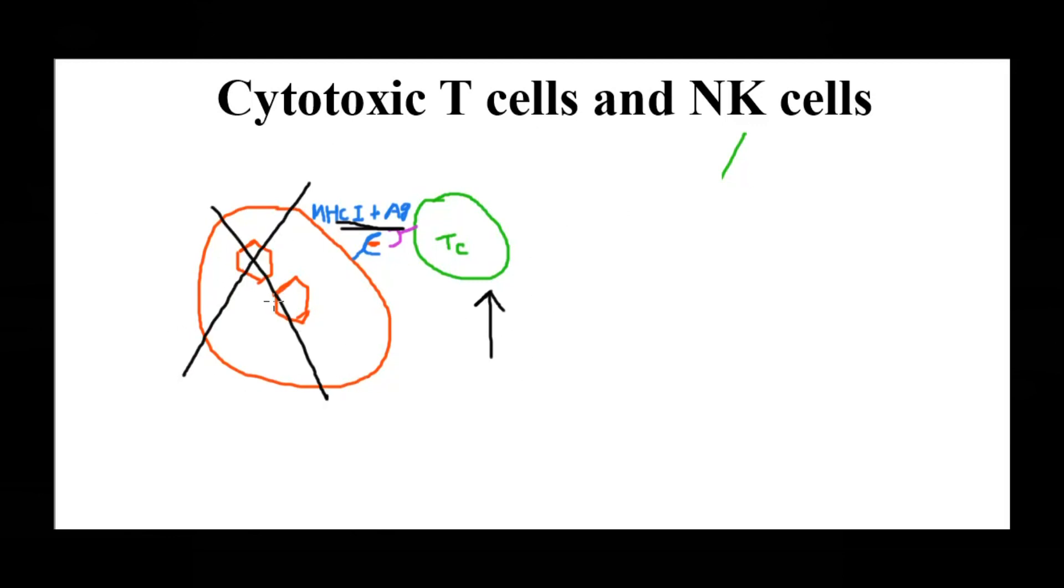Whether it is an NK cell or TC cell, the mechanism is similar. Now we will see: once NK cells and TC cells recognize such infected or tumor cells, how are they going to kill them?